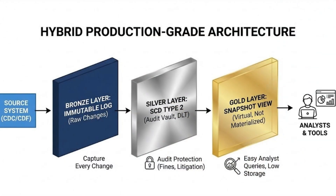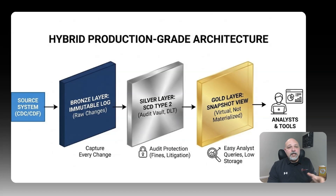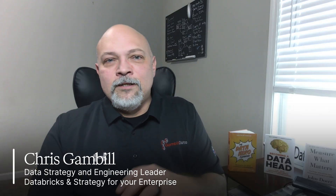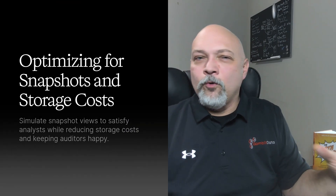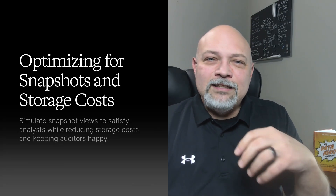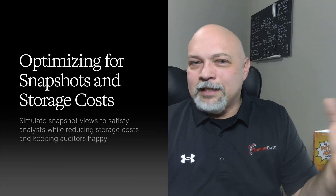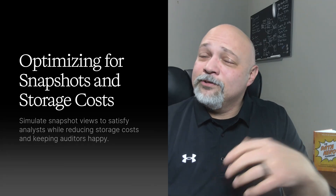Here is the production-grade standard: a hybrid architecture. First, the immutable log — kept in your bronze layer, capturing every change via CDC or CDF. Second, the SCD layer — your silver layer tables, built as SCD type 2 using DLT. This is your audit vault; it protects you and your company from fines, litigation, and regulatory issues. Third, the snapshot view — your gold layer. Don't materialize a snapshot table; create a view that simulates it. This gives analysts their easy snapshot queries while keeping auditors happy and your storage bill low.